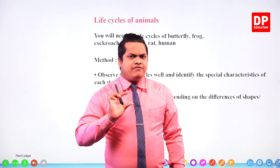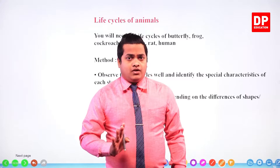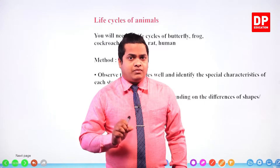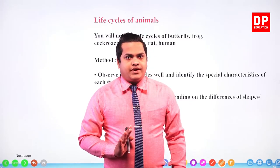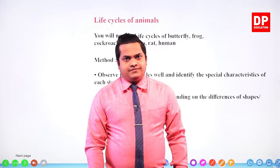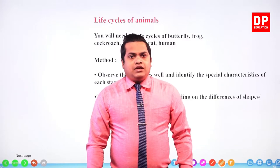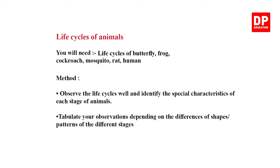In the earlier chapter we discussed about several organisms — plants and animals both. But within this chapter, we'll be discussing only about animals. We'll be taking several animals and identifying several stages within their life cycles. Like in the previous activity, we'll be needing several images and video clips regarding the life cycles of animals.